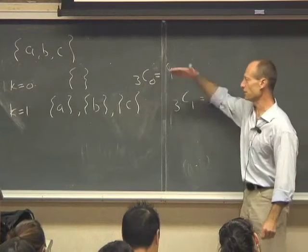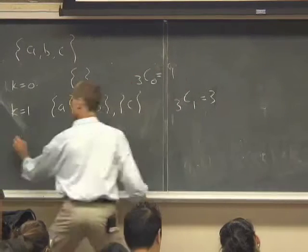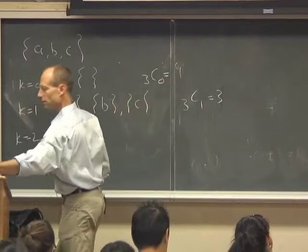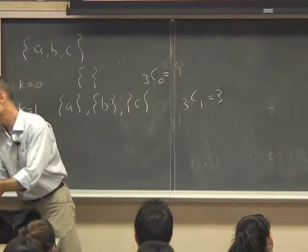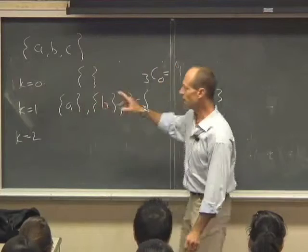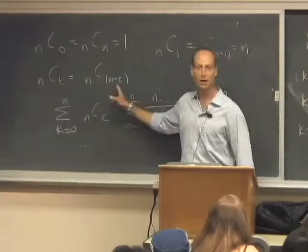So we've got the subsets of size 0 and the subsets of size 1. How about the subsets of size 2? Now we've got this idea that, remember, n choose k is the same as n choose n minus k.